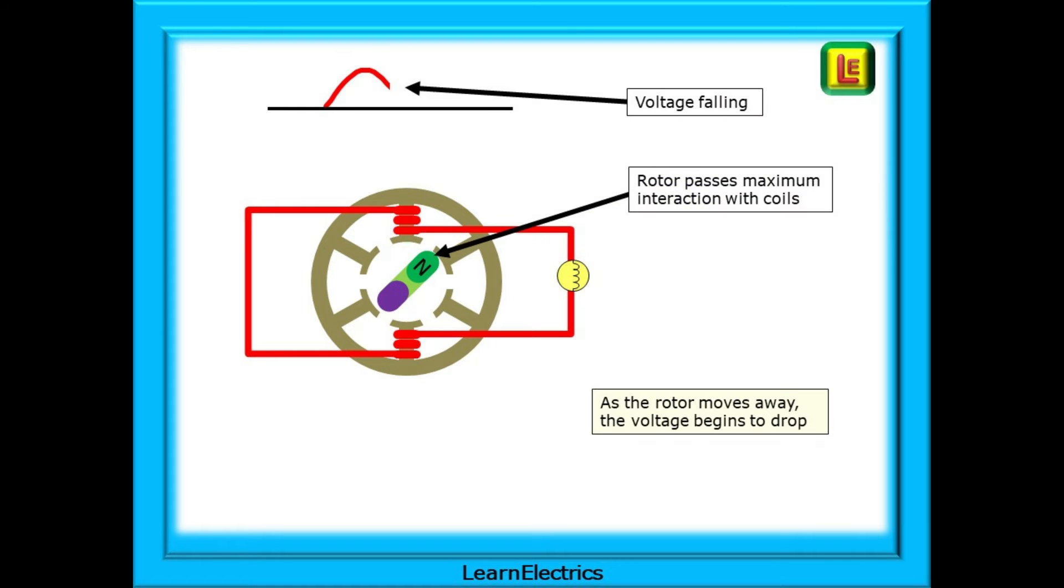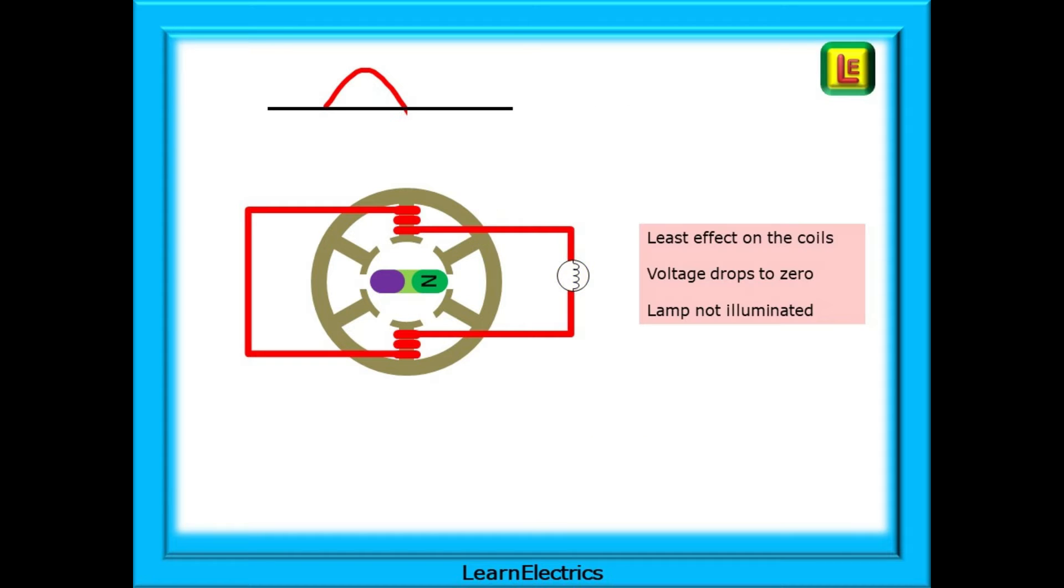As the rotor continues to rotate, it moves away from the red coil and the magnetic flux has less effect on the coils. This means that the voltage begins to fall as shown at the top. Now the rotor is at the midpoint between the two coils. The first half cycle is complete. The magnetic flux has least effect on the coils, so the voltage drops to zero and the lamp is not illuminated.